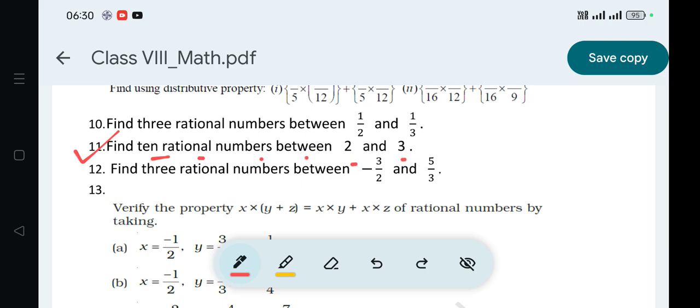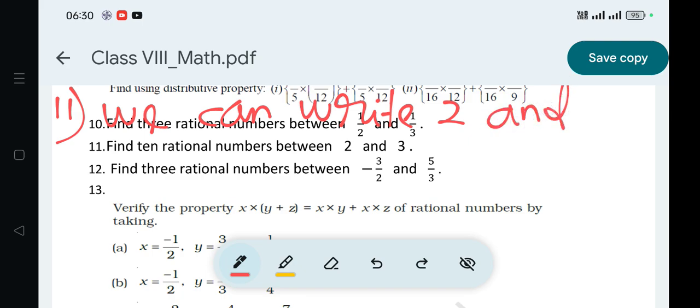Between these two terms, we need to find 10 rational numbers. We can write 2 and 3 as fractions.